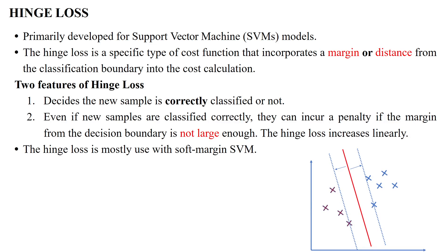The hinge loss is one of the loss functions primarily developed for the support vector machine classifier. It is a specific type of cost function that incorporates a margin or distance from the decision boundary of classification into the cost calculation.